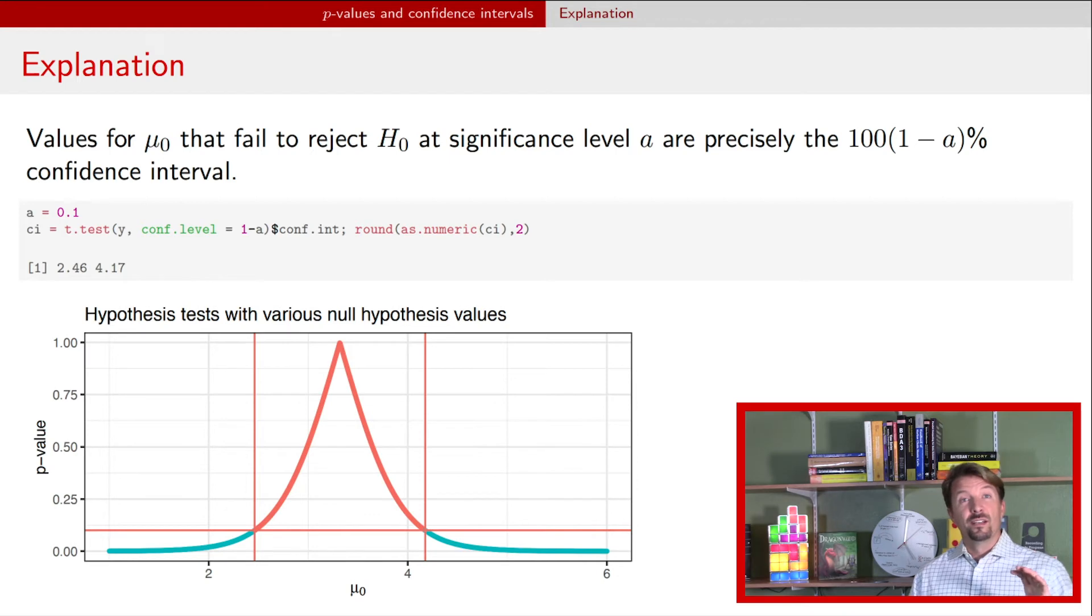So sometimes you might hear statisticians talking about p-values as inverting hypothesis tests. They'll talk about confidence intervals as being inverting hypothesis tests, and that's what they're talking about. So one way to think about constructing that confidence interval is just to invert the hypothesis test. That means do it a bunch of times, find out where it's not significant, that's your confidence interval.